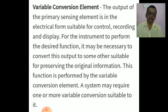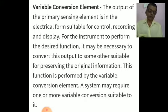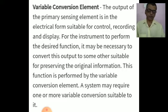The second element is the variable conversion element. The output of the primary sensing element may be an electrical signal of any form — it may be voltage, frequency, or some other electrical parameter. Sometimes this output is not in a suitable form for the instrument to perform its desired function, so it may be necessary to convert this output to some other suitable form — for example, using an A to D converter or D to A converter. If the next element requires the input in digital form and the transducer output is in analogous form, then an analog to digital converter is required. This is the function of the variable conversion element.